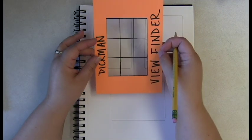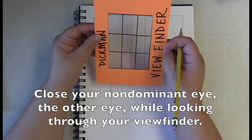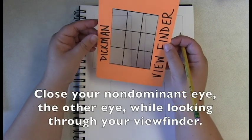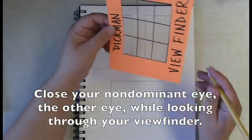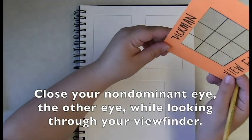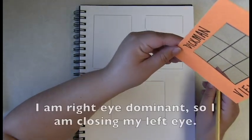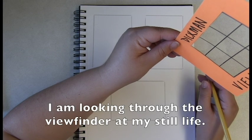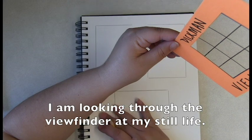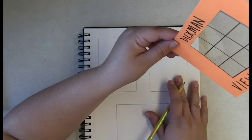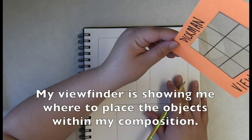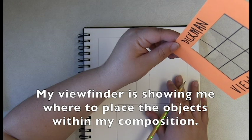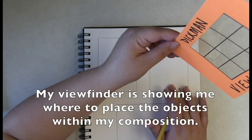Once you have found your dominant eye, you are going to close your non-dominant eye, the other eye, while looking through your viewfinder. I am right eye dominant, so I am closing my left eye. I am looking through the viewfinder at my still life.